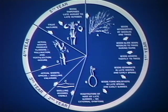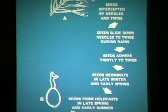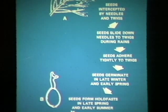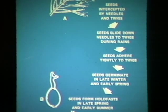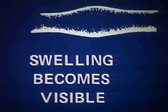The life cycle of the dwarf mistletoe averages five years and develops as follows. During the first year, seeds are ejected and intercepted by foliage. Rains cause the seeds to slide down and adhere to the twigs. Later on, they germinate, form holdfasts, and then begin penetration of the host. There are no indications yet that the tree has been infected. In the second year, swelling of bark and wood begins, causing distortion of the annual rings.